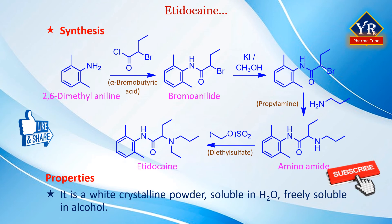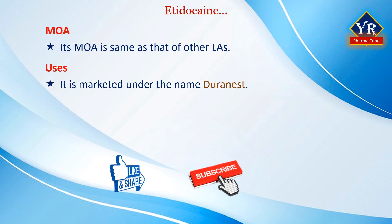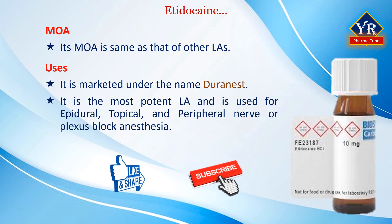Etidocaine is a white crystalline powder soluble in water and freely soluble in alcohol. It acts by a similar mechanism to other local anesthetics and is marketed under the name Duranest. The additional lipophilicity gives etidocaine a quicker onset, longer half-life, and increased potency compared with lidocaine. It is the most potent local anesthetic and is used for epidural anesthesia, topical anesthesia, and peripheral nerve or plexus block anesthesia. It is an injectable local anesthetic during surgery, labor, and delivery. It has a longer duration of activity but has the main disadvantage of increased bleeding during oral surgery.